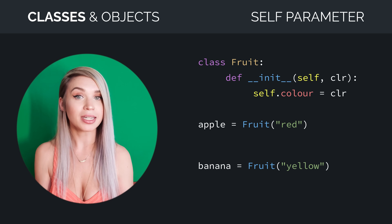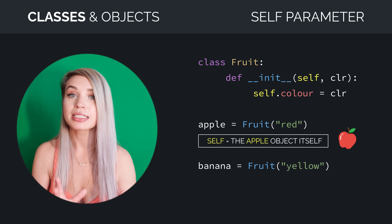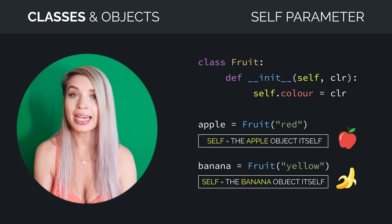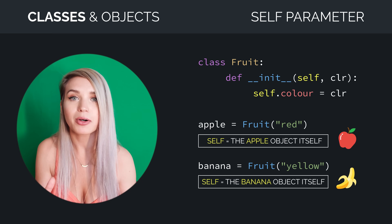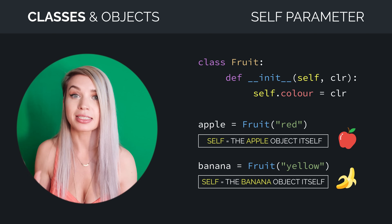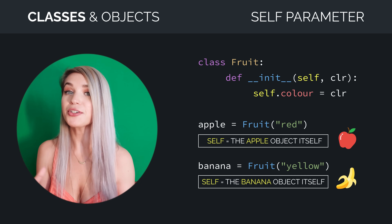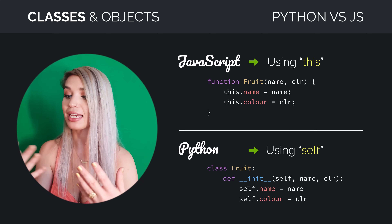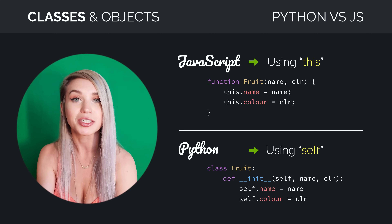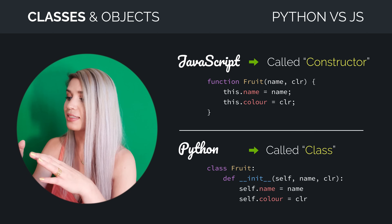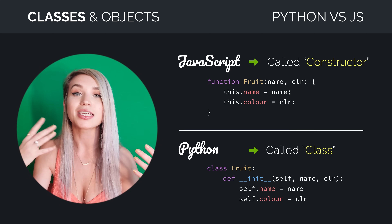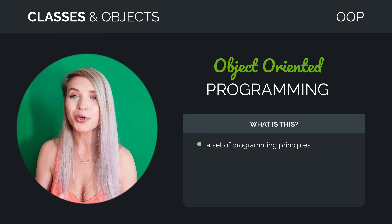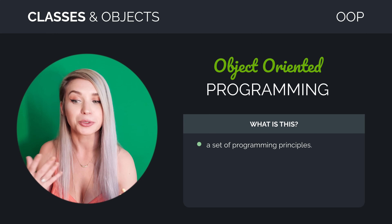For example, self in the case of apple represents the apple object itself, while in the case of banana, it no longer knows anything about the apple but represents the banana object itself. And if you're coming from JavaScript, self is the equivalent of this, while class is the equivalent of a constructor function. In both cases, classes or constructors, they represent object oriented programming, which is a very organized set of principles for software development.